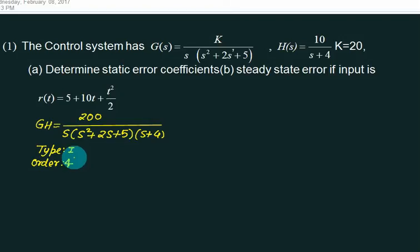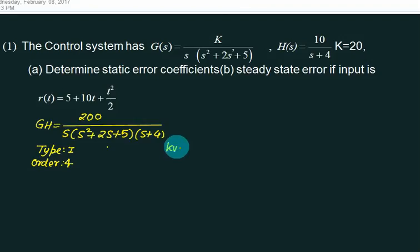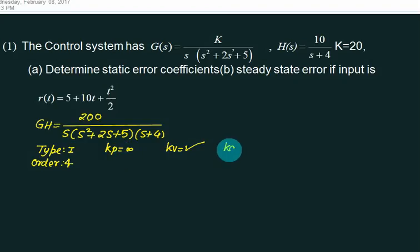If it is type 1, then will Kp equal infinity? Is it type 1? Which value exists? Kp exists, Kv exists. For type 1: Kp exists, Kv exists. What is Kp? Kp equals infinity. And what is Ka? Ka equals 0.